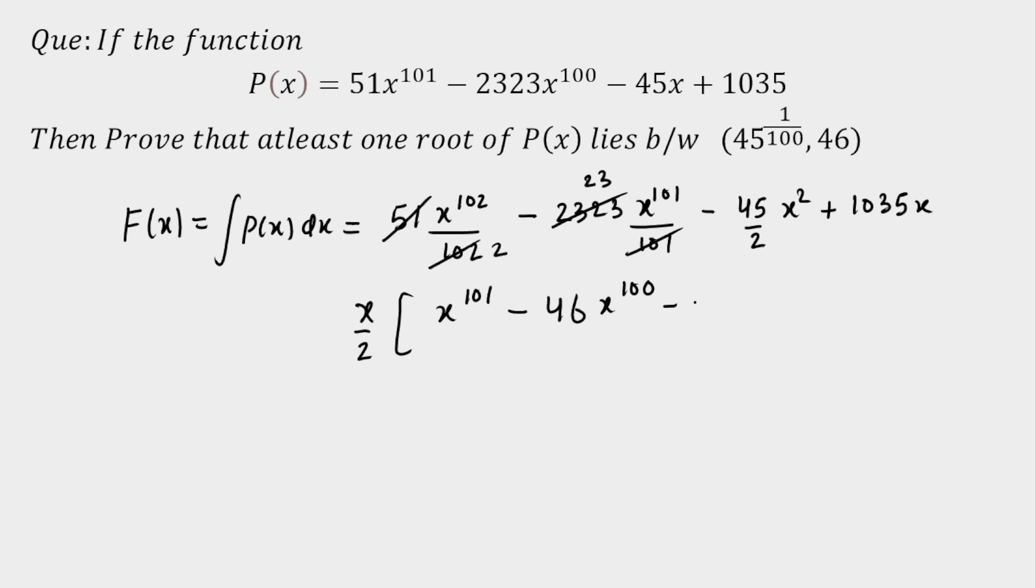Now remaining is, I think, 1/2 I can take common here, and then the remaining is 45x, and then remaining here is I have to multiply by 2 here, so we will get this as 2070 here. So this is the term remaining.